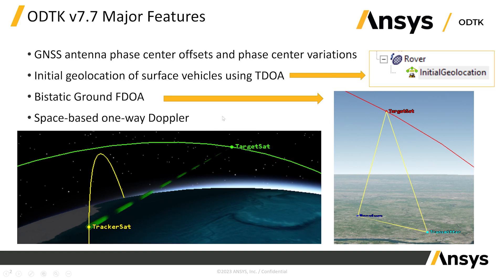We use those two signal legs to compute a difference in frequency. Finally, we added a space-based one-way Doppler feature: a target satellite transmits, and a tracker satellite monitors that transmission and computes Doppler on the carrier signal from the target satellite. It's one-way, meaning it only goes from the target to the tracker and is not turned around and sent back.